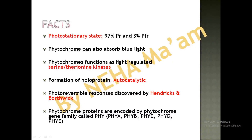The polypeptide chains present as a dimer in the phytochrome structure are encoded by the phytochrome gene family, designated 'phy', which has five members: phyA, phyB, phyC, phyD, and phyE. All of these function under different conditions and give rise to different phytochromes — either PR or PFR.